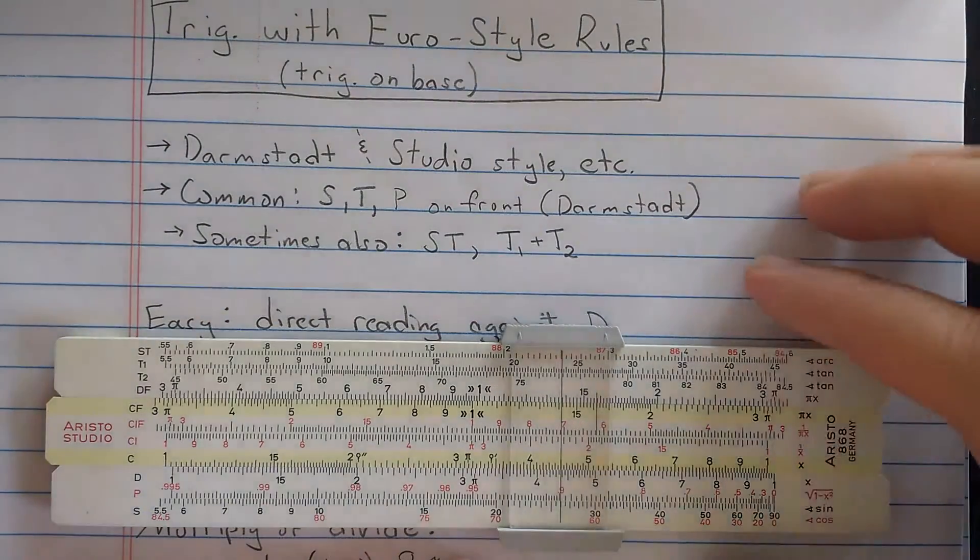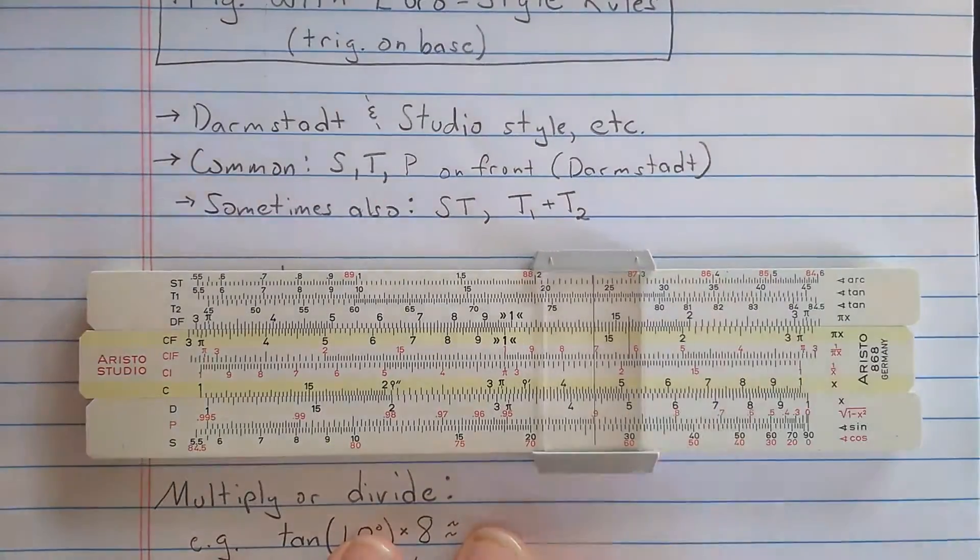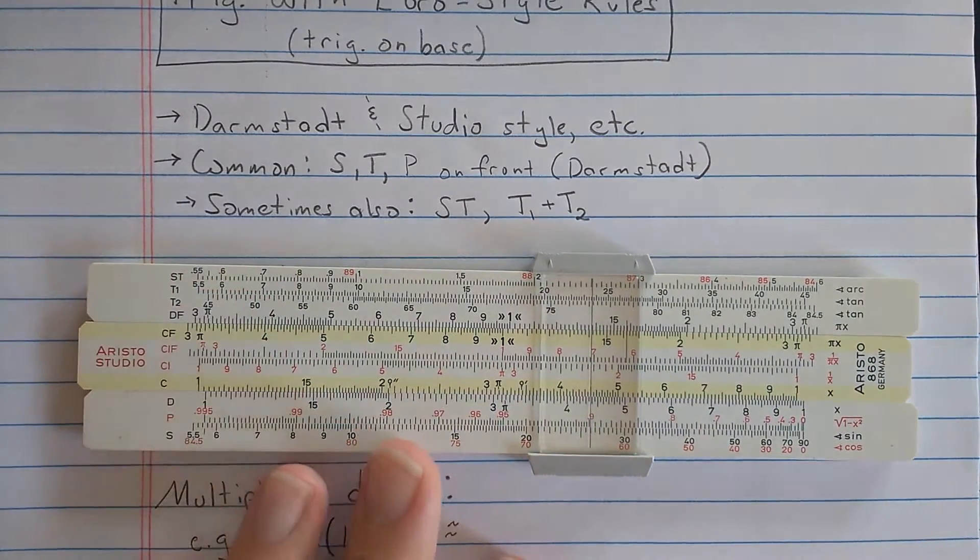Lots of them are out there. There's different variations on it. Some variations on the Aristo Studio have only one tangent scale.